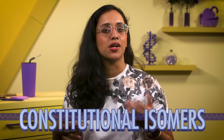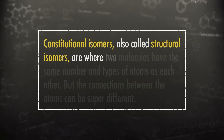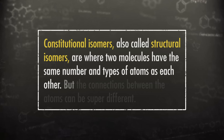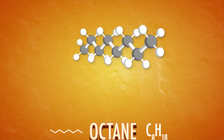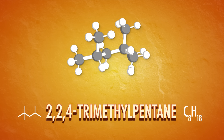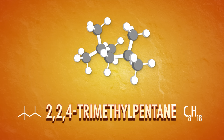Constitutional isomers, also called structural isomers, are where two molecules have the same number and types of atoms, but the connections between the atoms can be very different. Take octane and isooctane, two components of gasoline — they're constitutional isomers because they both have 8 carbons and 18 hydrogens. In octane, the carbons are attached in a long chain without any branches. Isooctane is branched, though, and by IUPAC rules it isn't octane at all — it has three carbon chain substituents and is properly called 2,2,4-trimethylpentane.